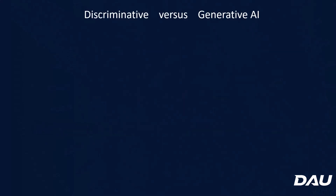By now you might have come across the terms discriminative and generative AI. These terms describe two major categories of models in machine learning, and these categories are frequently employed in the context of neural networks.